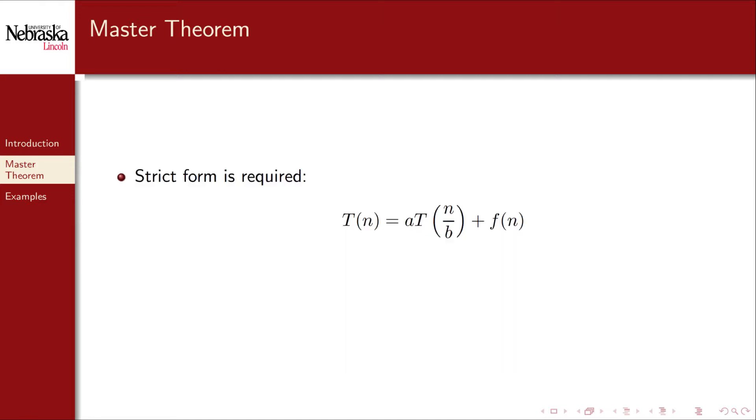The master theorem is a bit of a misnomer, as it cannot be applied generally to any recurrence relation. It can only be applied if your recurrence relation is of this particular form. That is, you make a constant number of recursive calls, and the input is decreased by a constant amount each time, and some non-recursive work is performed.